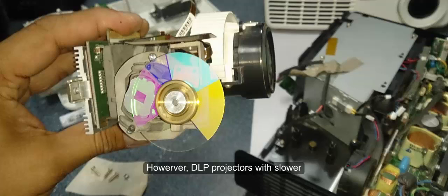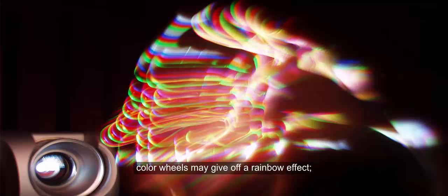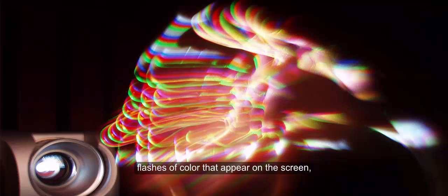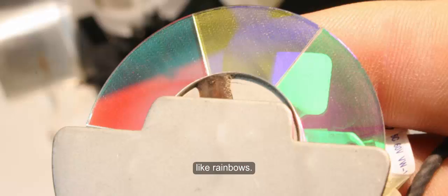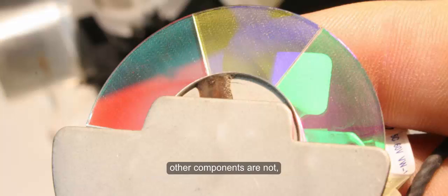However, DLP projectors with slower color wheels may give off a rainbow effect—flashes of color that appear on the screen like rainbows. Furthermore, while the chip is sealed, other components are not, so dust can settle on the color wheel and affect image quality.